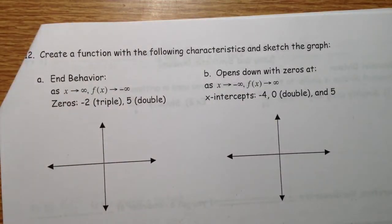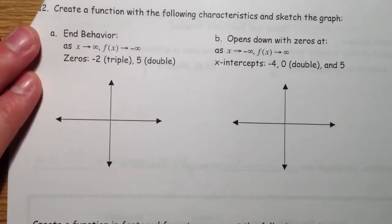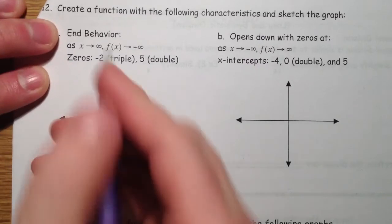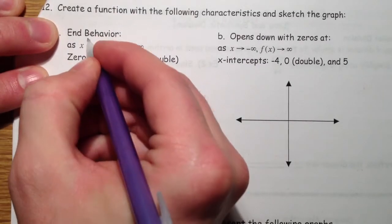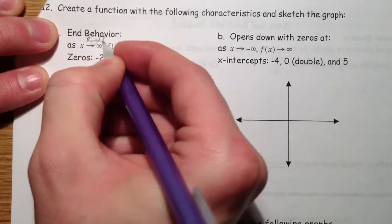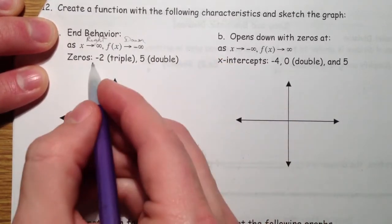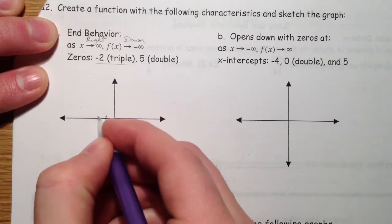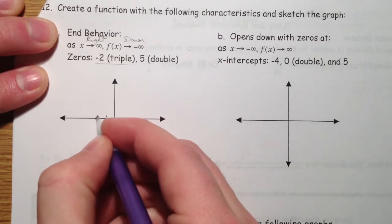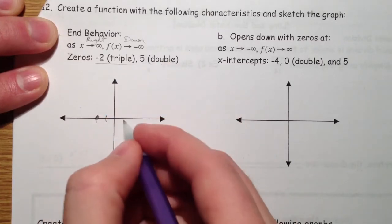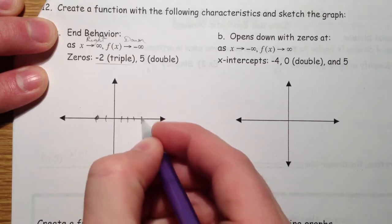Let's practice these end behaviors. So let's say the end behavior is as x goes to infinity, as x goes to the right, f(x) goes to negative infinity. So that goes down. We have zeros at negative 2 and 5.